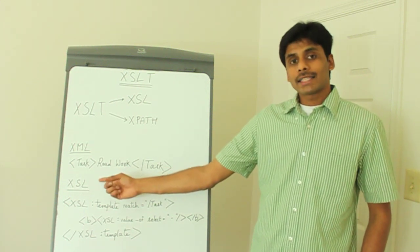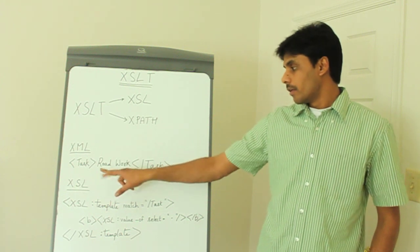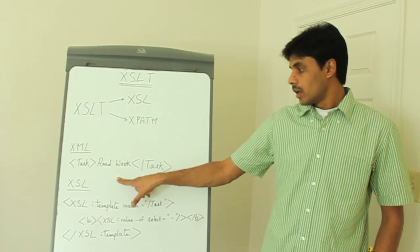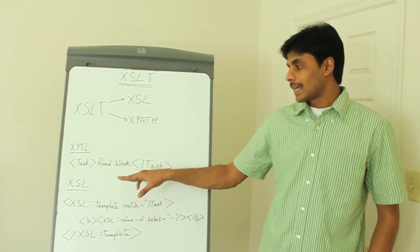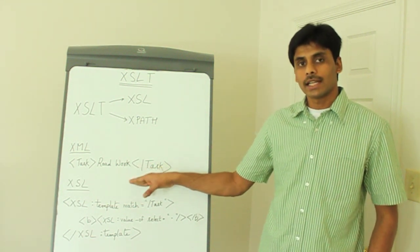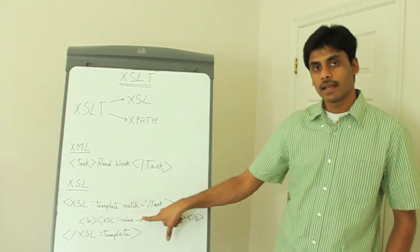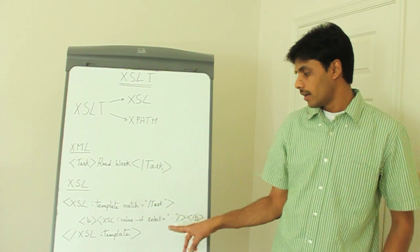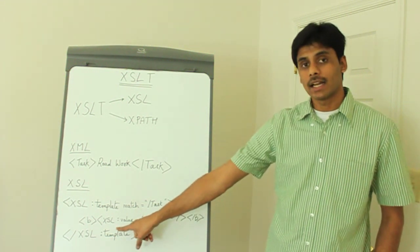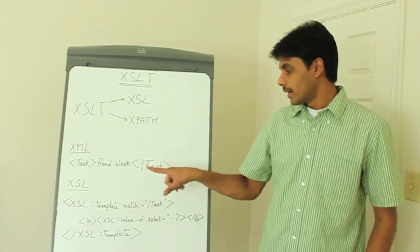For example, if we have an XML document with a single element called task with some data in it, to display the contents of this task element within bold tags using XSL, all we need to do is use the XSL template match syntax, and we'll use the XSL value-of syntax to display the contents of the task element.